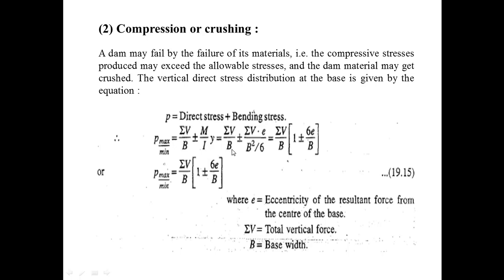This is equal to ΣV/B ± (ΣV·e)/(B²/6). Taking ΣV/B as common, we get (ΣV/B)(1 ± 6e/B). So Pmax or Pmin equals (ΣV/B)(1 ± 6e/B).